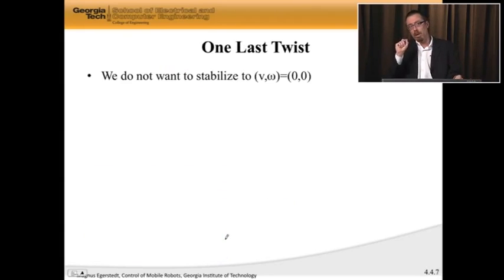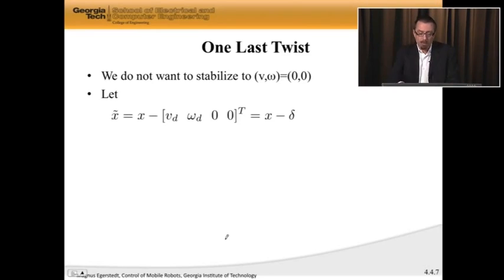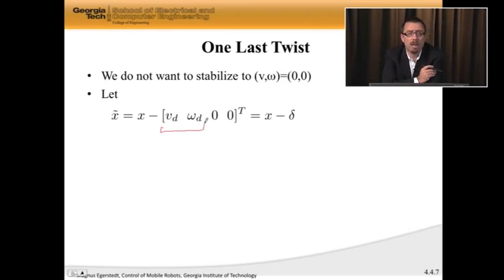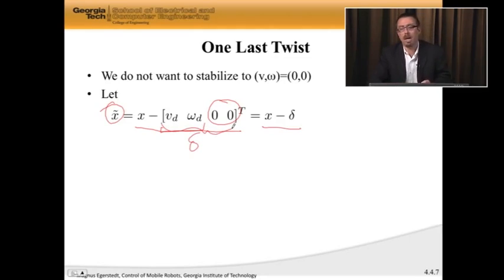The last twist, though, before I do that is I want my system to actually move. So I'm not going to stabilize it to V and omega equal to 0, because that's not what I want. Instead, I'm going to say I would like it to go to V desired and omega desired. So let's just subtract away V desired, omega desired, and then I have 0 here, because I want to stabilize it to phi and phi dot being 0, meaning the pendulum being upright. I'm going to define a new state, x tilde, which is my old state, minus this delta, which is the thing that I would like to stabilize it to.